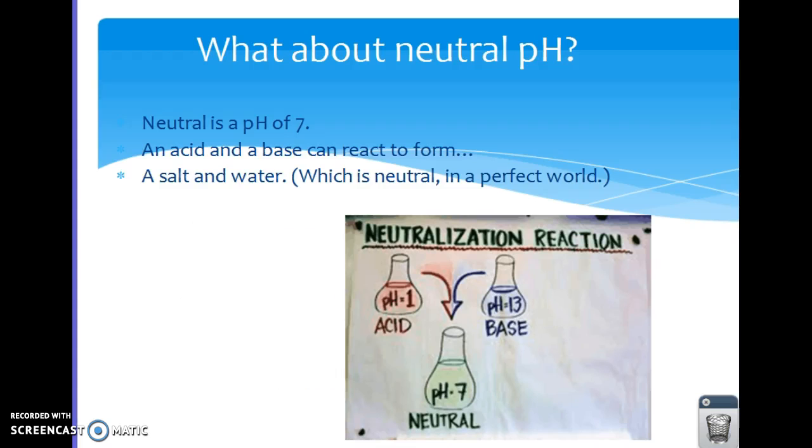So what is a neutral pH? Well, we've already mentioned that it was 7, and when you add acids and bases together, they can neutralize one another. It's called a neutralization reaction, and that is what happens when you mix an acid and a base together, and they would form a salt and water.